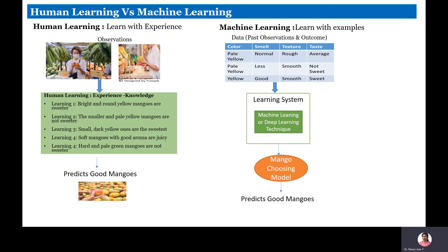Let's look at one example scenario: prediction of good mangoes. How do human beings do it? Normally, we try to pick a mango and observe its color, smell, and texture. All these observations help us make a prediction. The experience and knowledge we acquire can come from an expert or through self-learning. This is human learning.